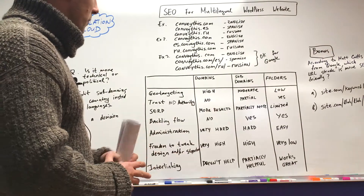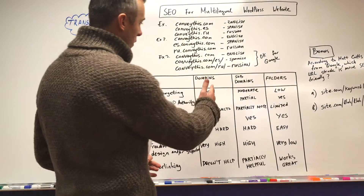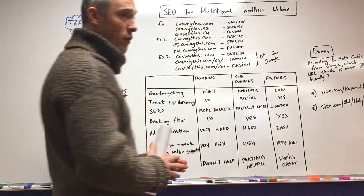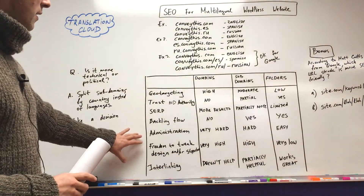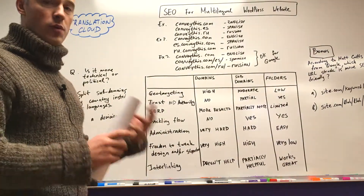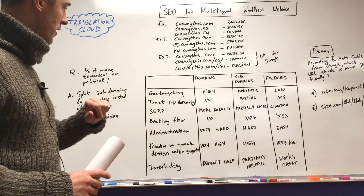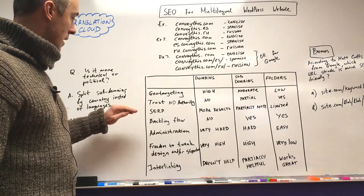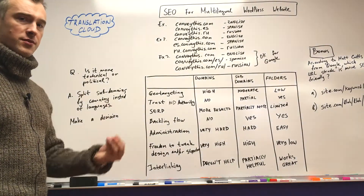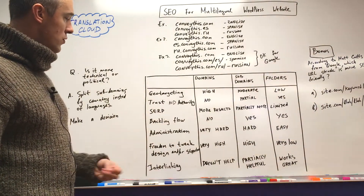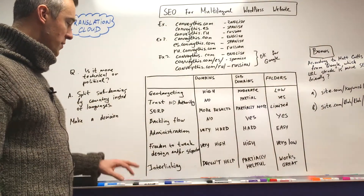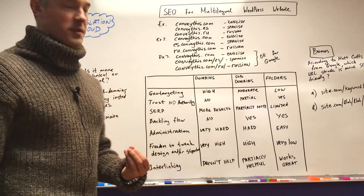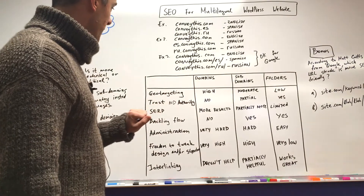Let's look at this comparison table showing all three examples: column two is the domains approach, column three is subdomains, and column four is folders. On the left-hand side we have different categories important for SEO, such as geo targeting, trust and authority, search engine results, backlink flow, administration, design/structure flexibility, and interlinking.